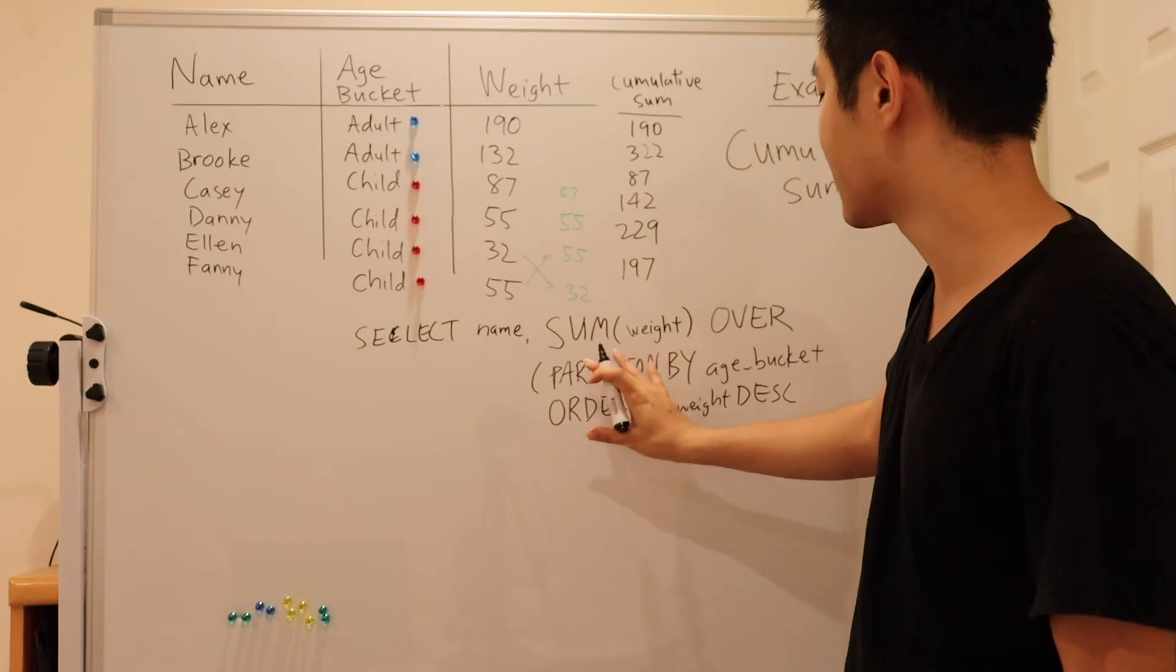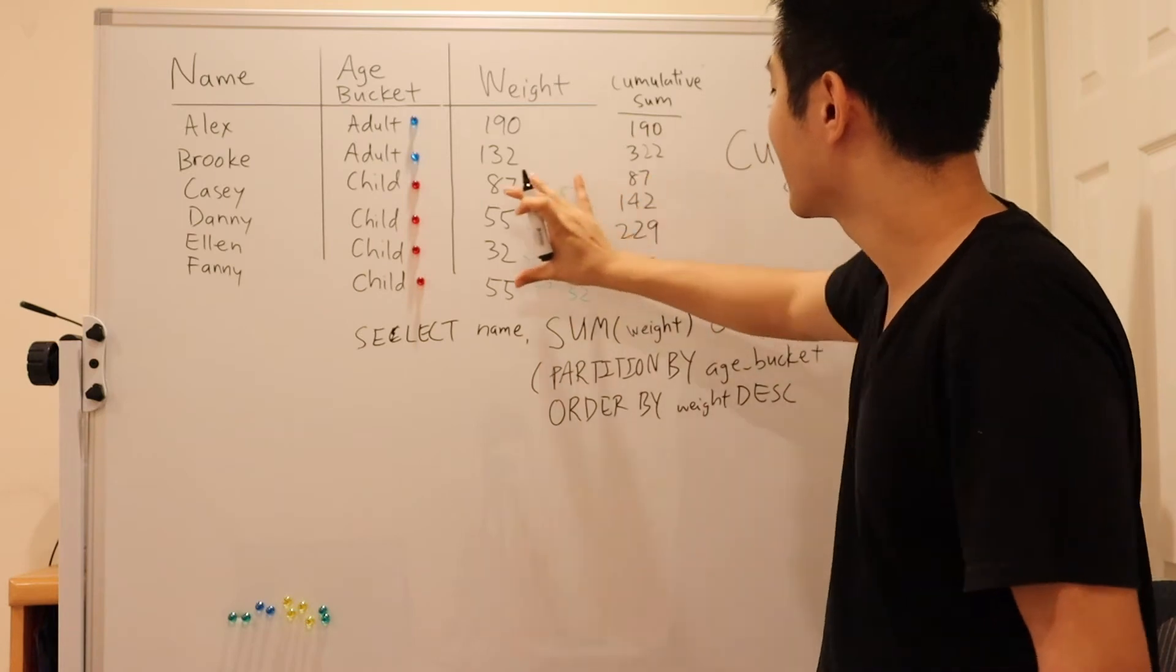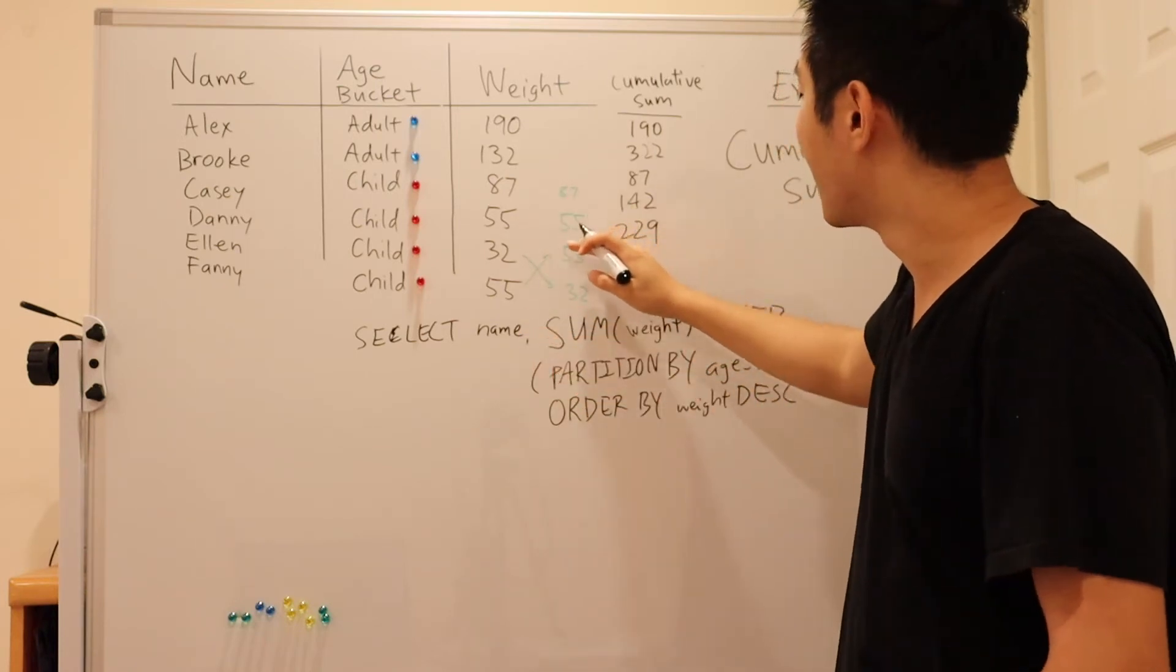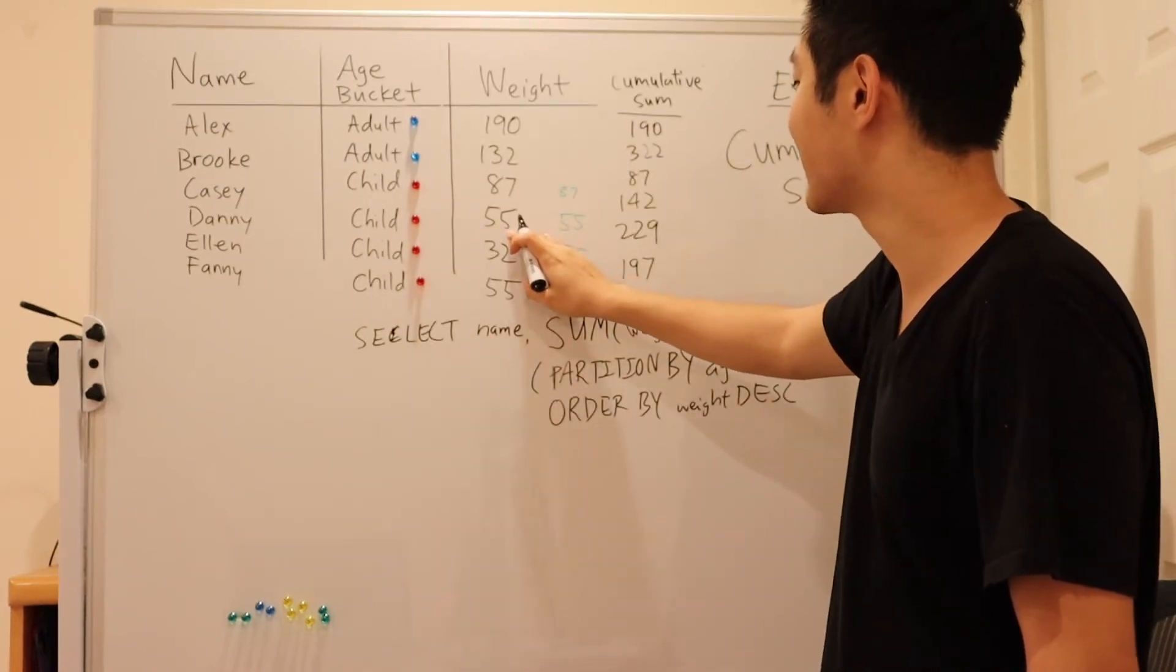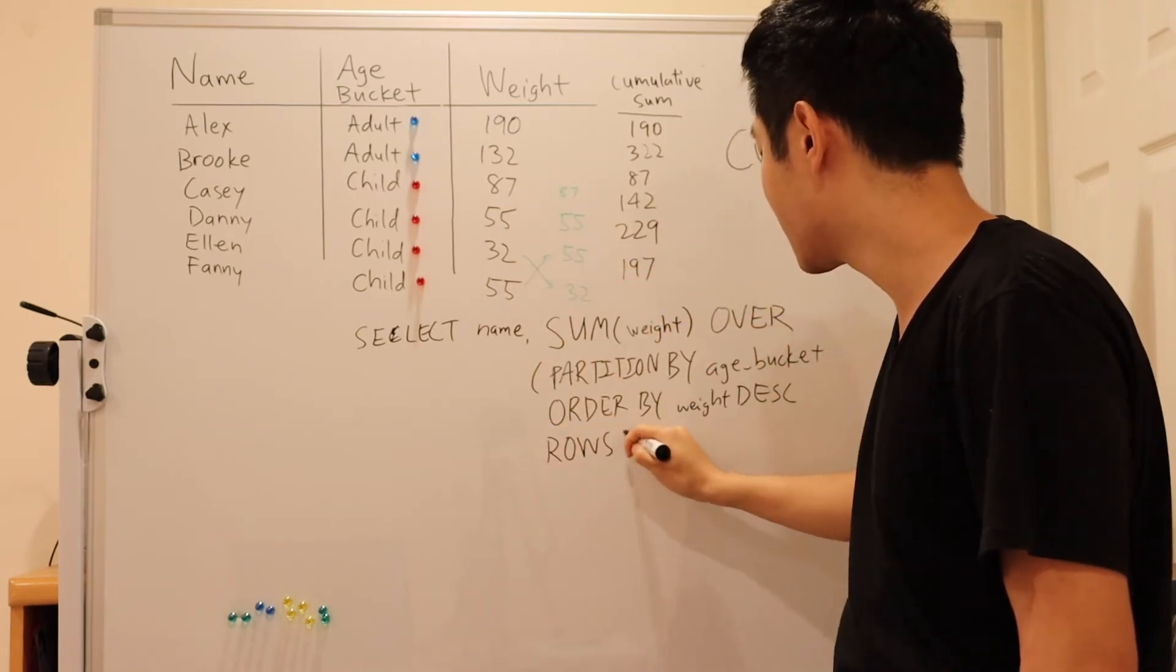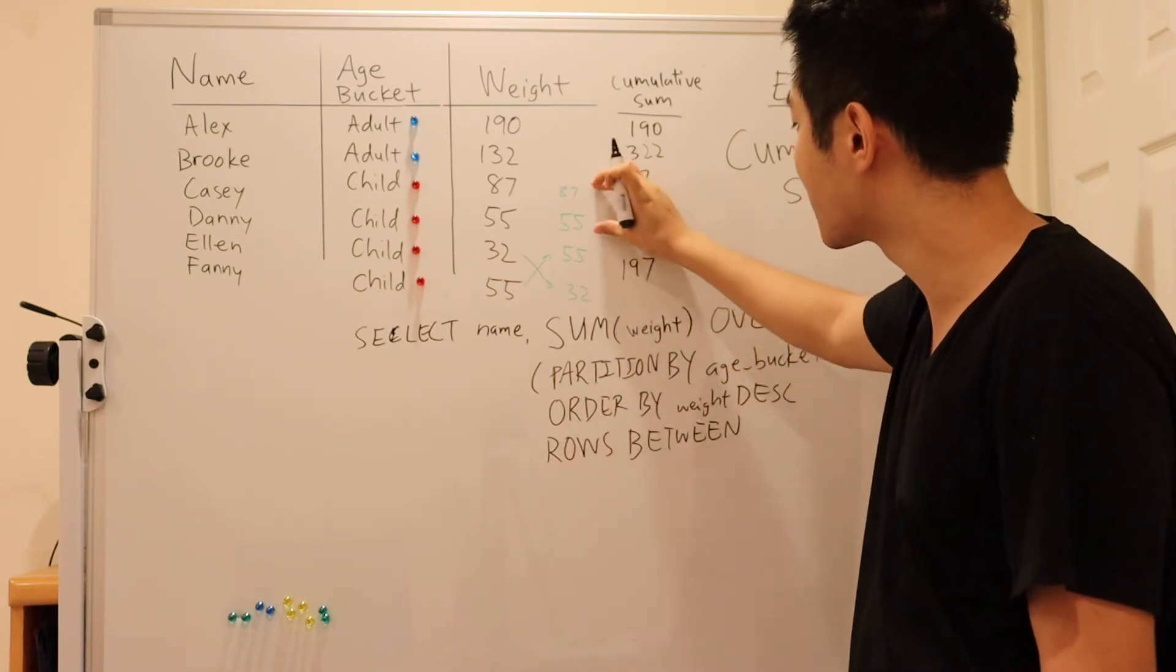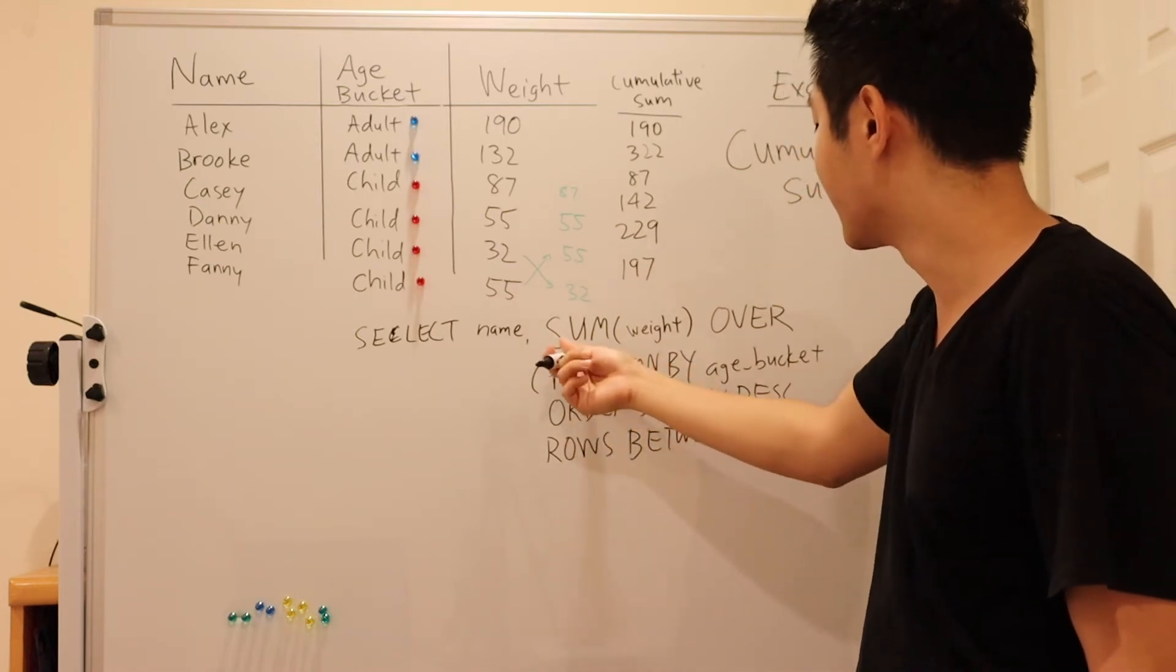But what this will give us, if we say sum weight over these partitions, we're just going to get the sum of all rows within the partition. But what we actually want is we want to get every row above this particular weight here. So Danny should have Danny and Casey's weight. We express this through rows between. This keyword will help us choose the rows from this partition that we want to include in this final sum here.